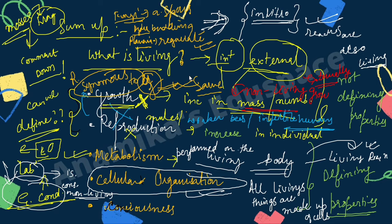Cellular organization is a defining property because all living organisms are composed of cells — unicellular (one cell) or multicellular (many cells). There is no exception, and when there is no exception, it qualifies as a defining property. Consciousness is also a defining property because a living being always responds to stimuli.